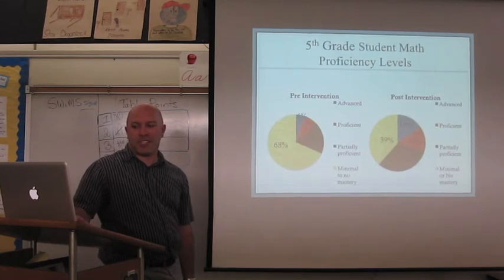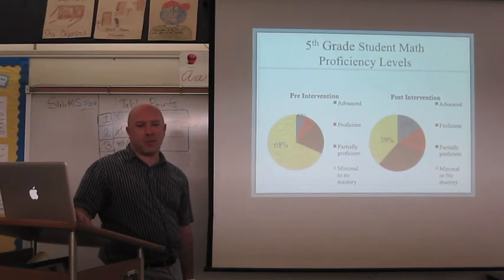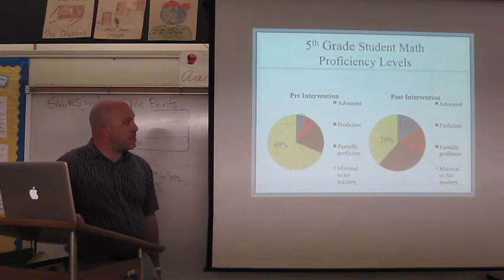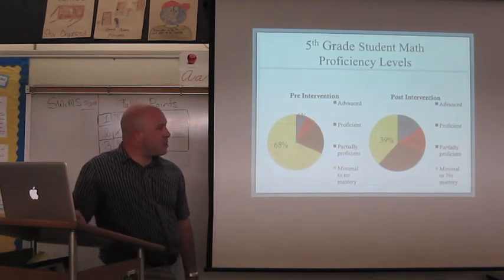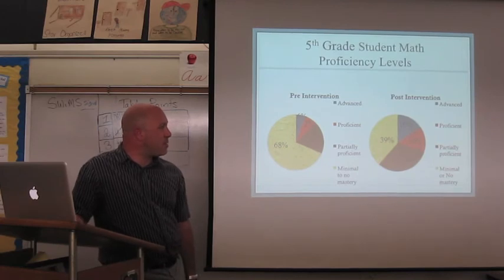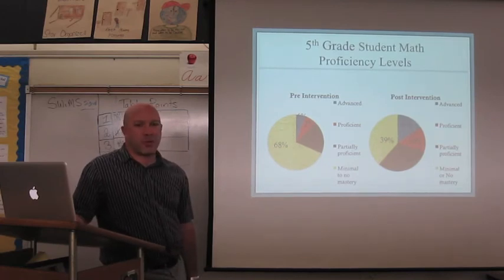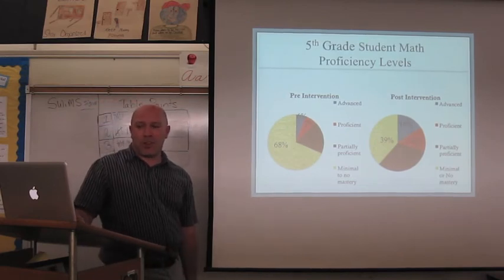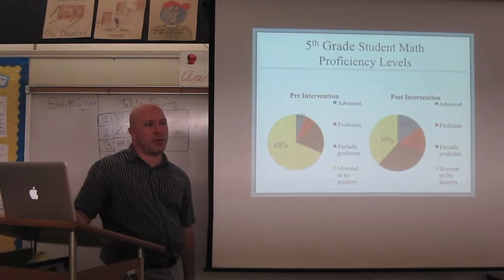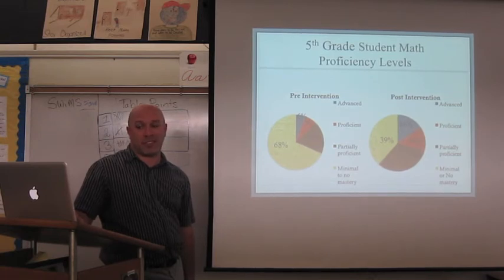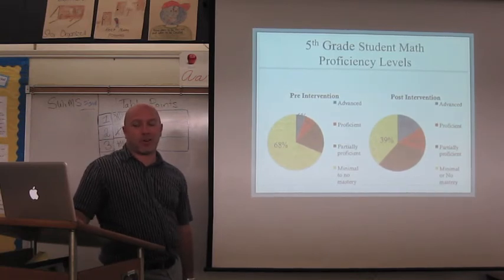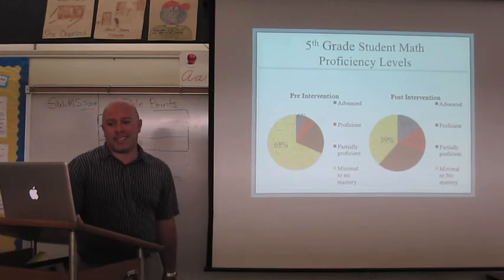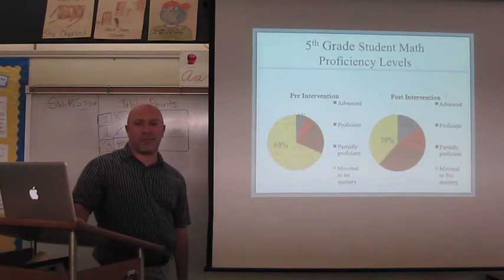The proficiency levels of students. Advanced would be scoring 90 to 100%. Proficient would be students who scored 80%. Partially proficient would be students who scored 60 or 70%. And then minimal to no mastery would be students scoring 50% or below. So before the intervention they took the pre-test. Only 6% were advanced. 7% proficient. 19% were partially proficient. And 68% of the students were scoring 50% or below on the math pre-test.